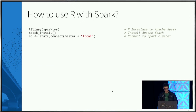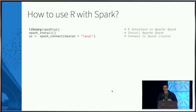So how do you use R with Spark? SparklyR is an R package — you need to install it from CRAN. Then you install Spark by running spark_install. Then you connect by running spark_connect with master equals local. You can work locally by specifying master equals local, but you can also run on cluster providers like Databricks, IBM, Microsoft, and Google, or on-premise like Cloudera and MapR.